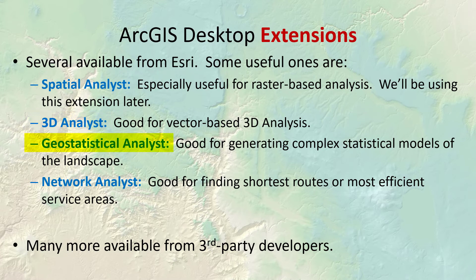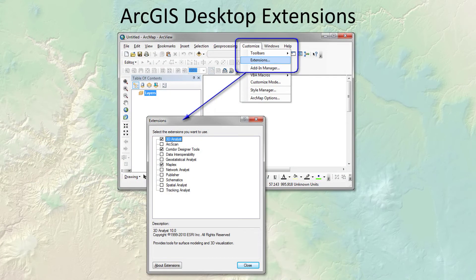Geostatistical Analyst is for complex statistical functions. Network Analyst is what you use for finding the shortest path, and it does some other cool things too. There are several other extensions available from Esri and plenty more from third-party developers. When you have an extension — especially one that Esri produced — you usually have to turn it on in ArcMap. You do this through the Customize menu, then go to Extensions, and check the extensions you want to turn on.